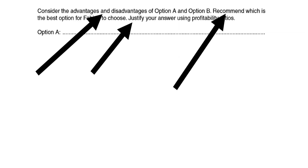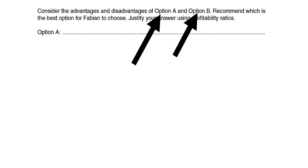Now let's have a look at the direction. The direction is directing you towards option A and option B in the case study. It's telling you to have a look at the case study and the two options — that's where all the key information will be for this answer. The rest of the case study may have important information as well, but option A and option B are very significant towards this answer.